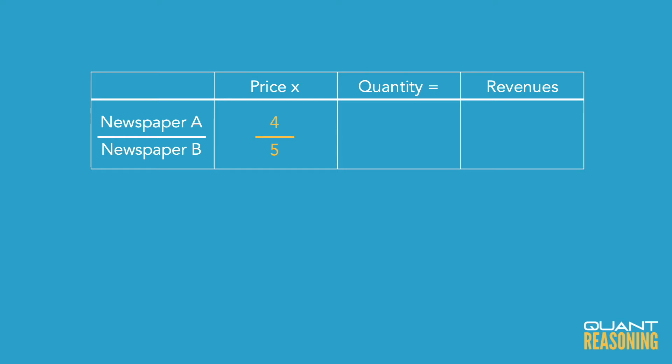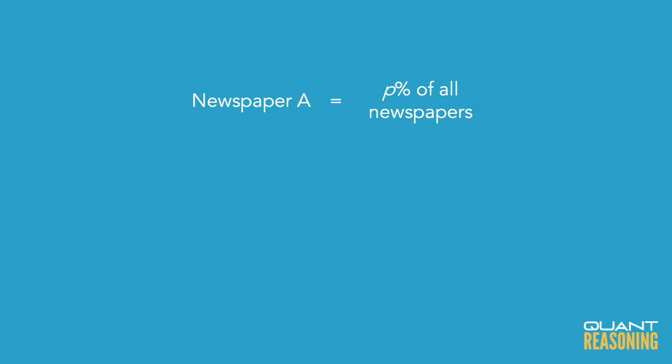Now, this next part is a bit tricky. They tell us that P percent of the total number of newspapers were newspaper A. So if P was, say, 30, if 30 percent came from A, then what percent would have come from B? 70 percent. How did I get 70? I subtracted 30 from 100.